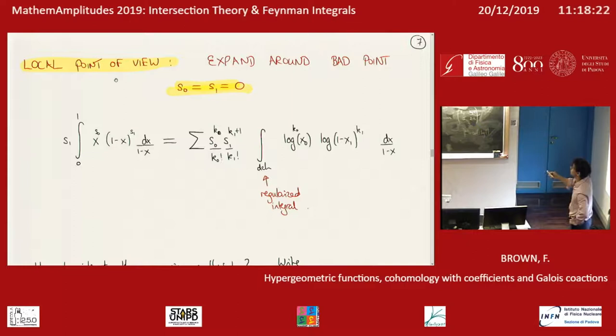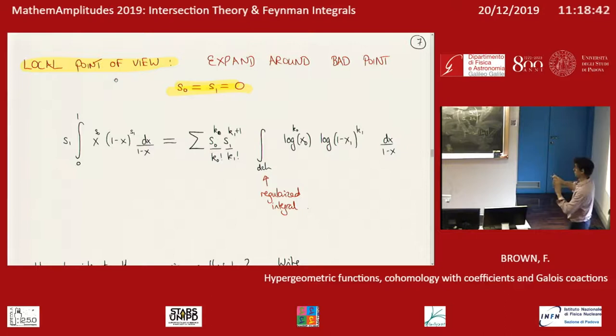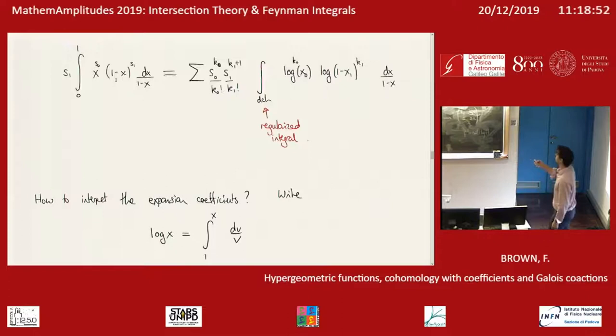Now let's look at the local point of view. We want to expand around the bad point s_0 = s_1 = 0 — the point that was ruled out in the previous global picture. We take these exponential terms x^s and expand them as an infinite sum of powers of logarithms. I'm brushing something under the carpet here — there are poles, there are some divergences, so one has to regularize some of these integrals, but let's not worry about that for now.